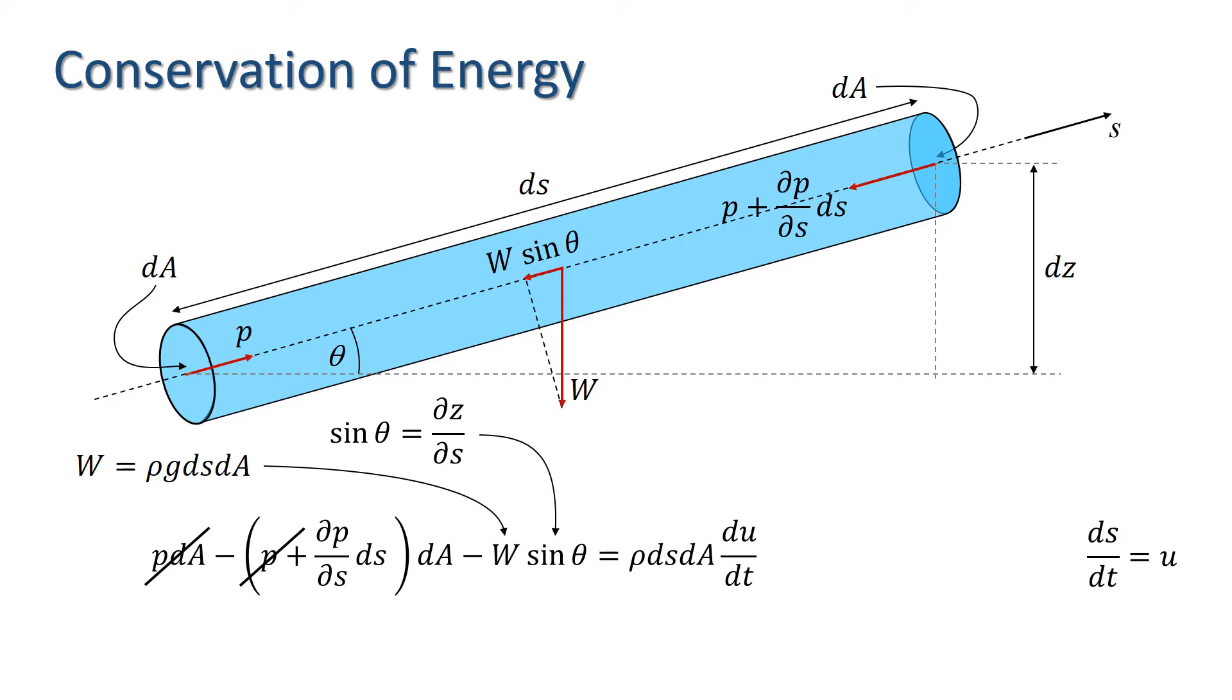We also know from the chain rule that dU/dT can be written as partial dU/dT plus dU/dS times dS/dT. And finally, U is the velocity in the S direction, hence dS/dT equals U. Substituting all those, we have this equation.